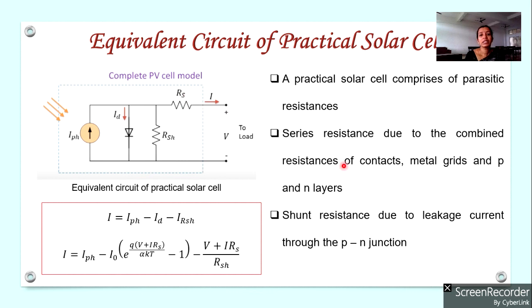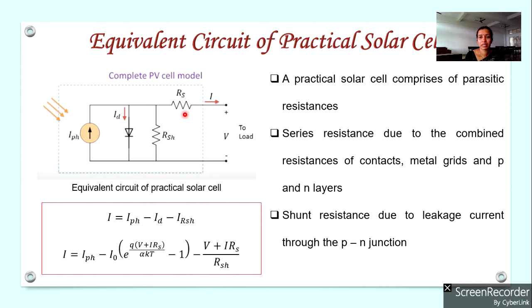There will also be a leakage current across the P-N junction — across the depletion layer. To represent this leakage current, a shunt resistor RSH is added, because this current flows across the junction. To minimize the leakage current, the shunt resistor RSH must have a high value of resistance, while the series resistance RS must have a small value to minimize voltage drop.